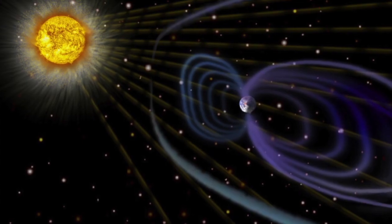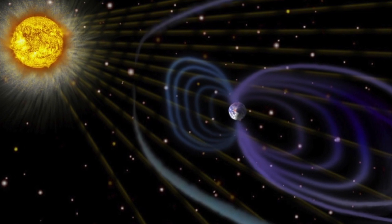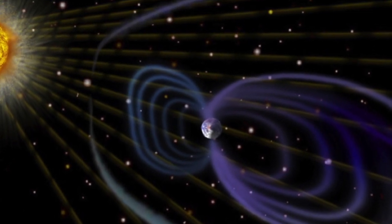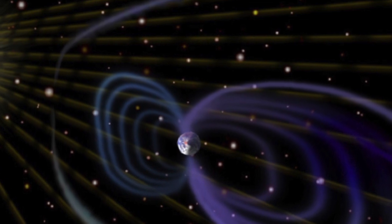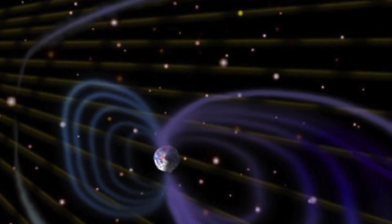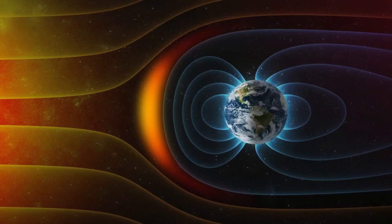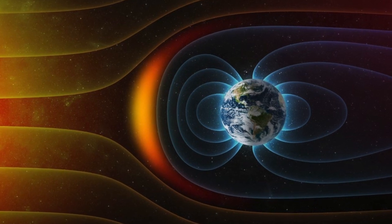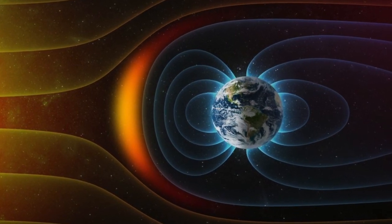Now, moving charges create magnetism. So as those charged particles race through the solar system, they create something called the interplanetary magnetic field. That field interacts with the Earth's magnetic field, and its effects reach all the way to the ground.